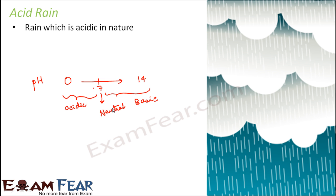Now, why is it not a favorable thing if rain is acidic? That's because acids have many harmful effects on our bodies. Acids can burn our skin if brought into direct contact with our bodies.